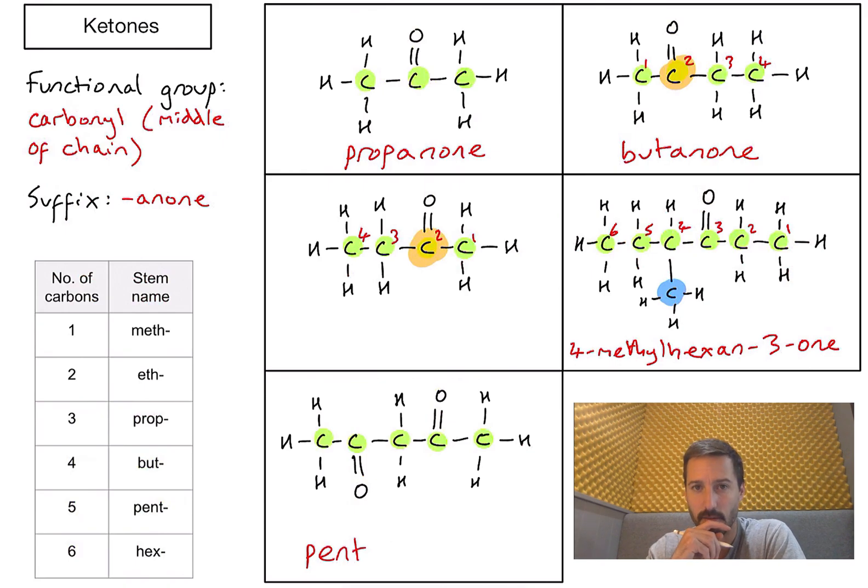And I need to think a little bit carefully. Let's number my carbons. Does it matter which way I do it? And if I go one, two, three, four, five, then my carbonyl groups are on the second and fourth carbon. Let's just check the other way around. One, two, three, four, five. Actually, that would also be the second and fourth carbon. So it doesn't matter which way I number my carbons.